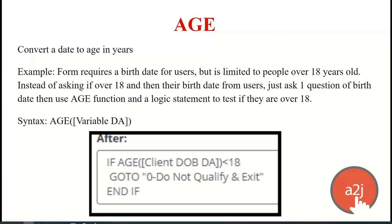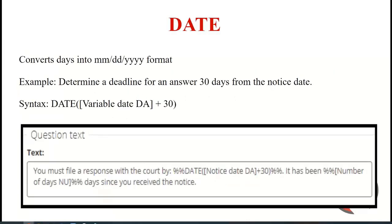The age function converts a date to age in years. The syntax is: age, parentheses, brackets, the date variable, close brackets, close parentheses. The date function converts a date into month/day/year format. The syntax is: DATE (all caps), parentheses, brackets, date variable — you can add math like adding 30 days here — close brackets, close parentheses. These functions are listed on our website at a2jauthor.org under the learn section in the A to J authoring guide, under the question design section.